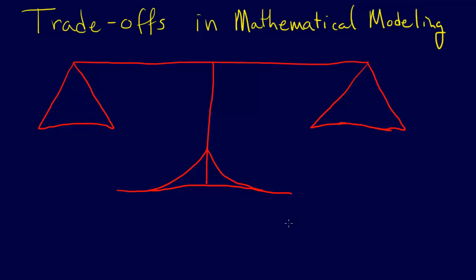All right, so the next thing is we create all these mathematical models, and that's great and fantastic, but what we have to realize is that whenever we're going to solve a real-world problem and we're going to create this mathematical model, there are certain trade-offs that occur.